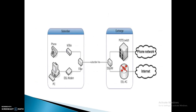This diagram shows the relation between the subscriber and the exchange. The phone network and the internet give signals to the port switch and DSL AC respectively. Both can connect to the DSL amplifier, and then through the subscriber line it goes to a filter for the subscriber, which connects to the NTP adapter and DSL modem, working through the phone and PC.